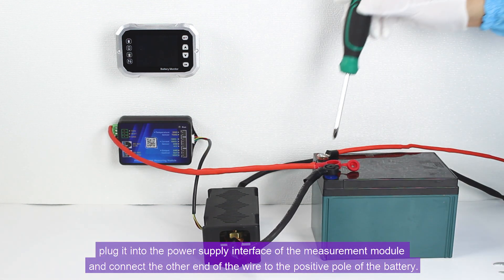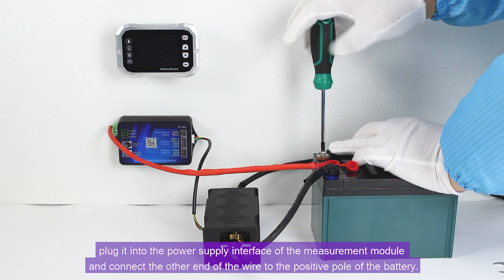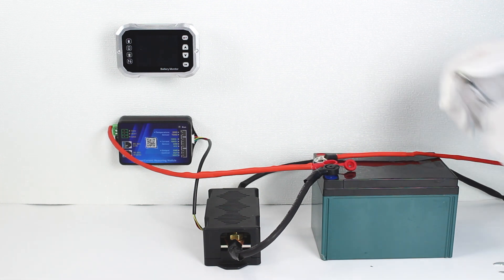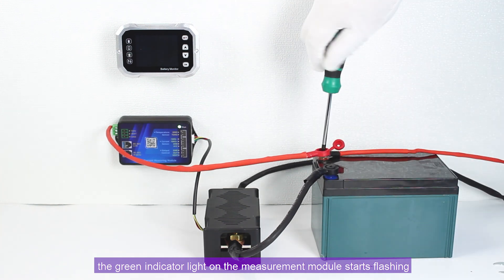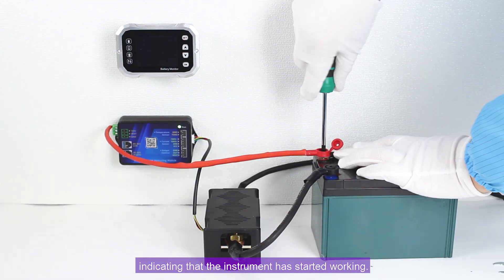Connect the other end of the wire to the positive pole of the battery. At this point, the green indicator light on the measurement module starts flashing, indicating that the instrument has started working.